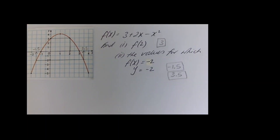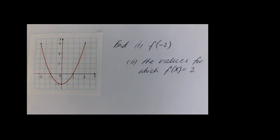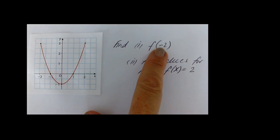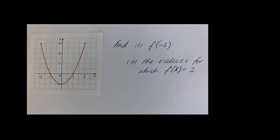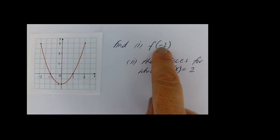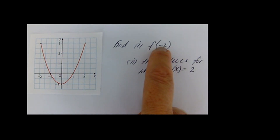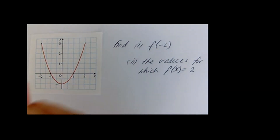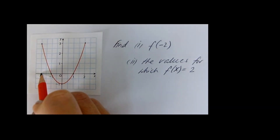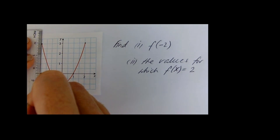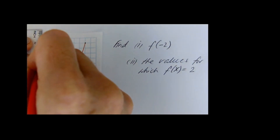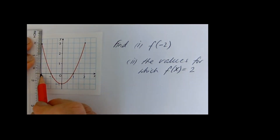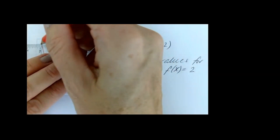There are my answers. This time we are asked to find f of minus 2, so again the minus 2 is replacing the x. Go to minus 2 on the x axis and we draw a vertical line to meet the graph. If you go to the x, you're reading off the y. And I can see it's there at 3.